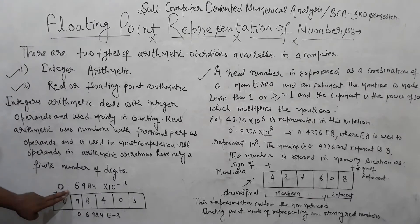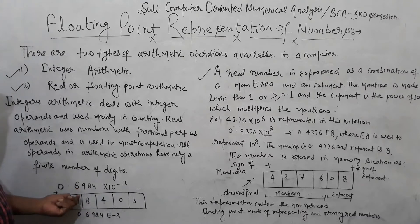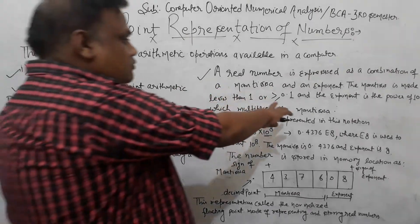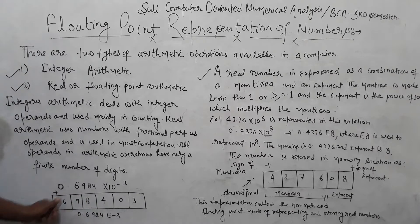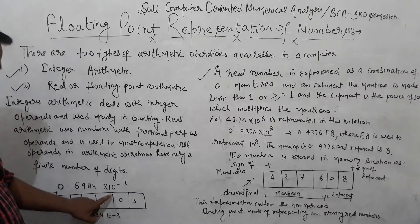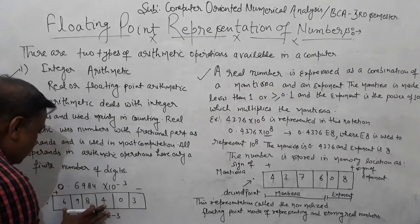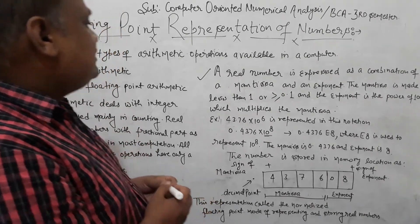For example, this number is 0.6984. The condition is that the mantissa must be less than 1 and greater than or equal to 0.1. So this number already satisfies the condition, and we represent it as 0.6984 with the appropriate exponent. Similarly, a number like 0.003 can also be represented in normalized floating point form.